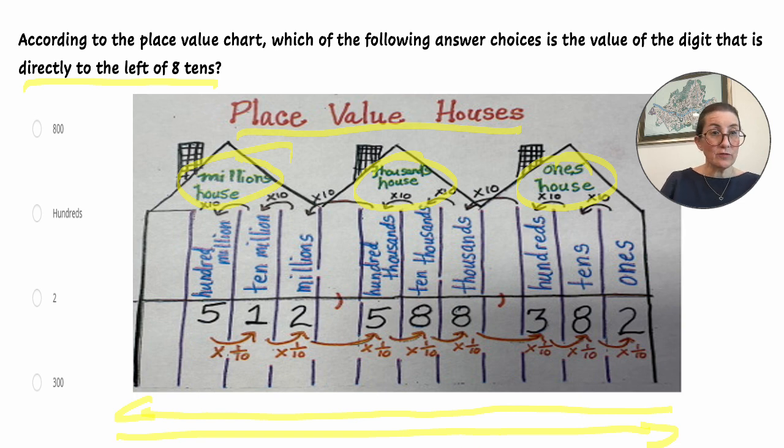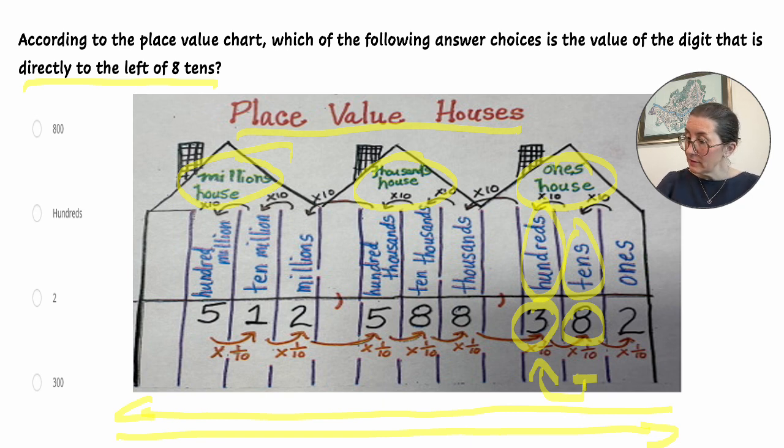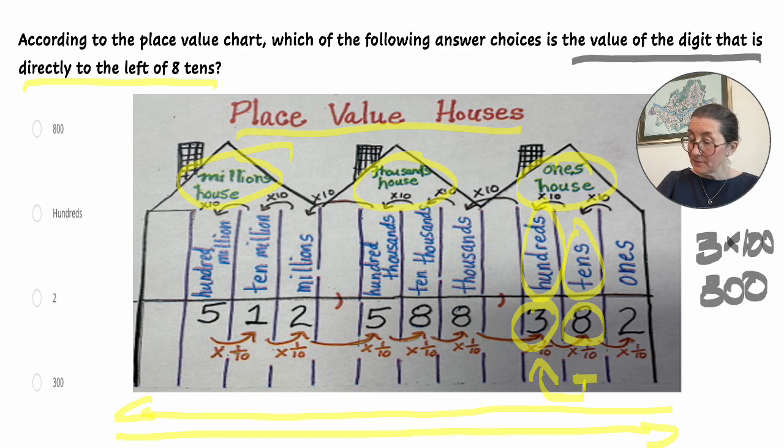So we are asked for the digit that is directly to the left of 8 tens. This is the tens, this is 8. So this is the starting point. Now we're going to look directly to the left, and the digit is 3, and the value is hundreds. So our number, the value of the digit is 3 times 100, which is 300.